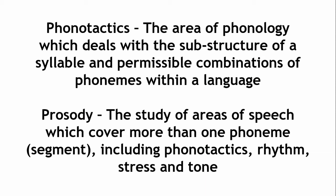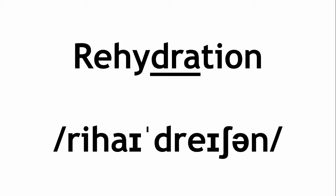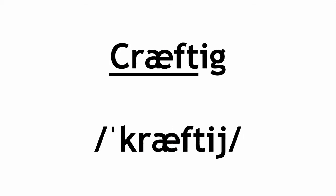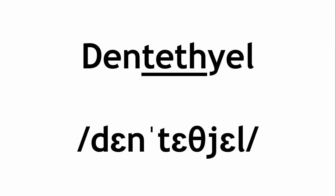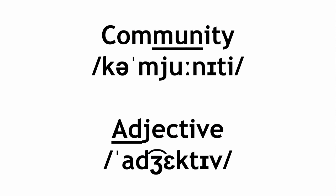Stress is the property which makes some syllables feel heavier than others. For example, the English word 'rehydration' carries stress on the third syllable. Stress is signified with a stress mark — a little dash you can see in the transcription. In some languages, the stress is predictable: in Old English it's always initial, while in Cornish it's always on the penult. In some languages, such as Modern English, it's variable. Compare the locations of the stress in 'community' and 'adjective'.